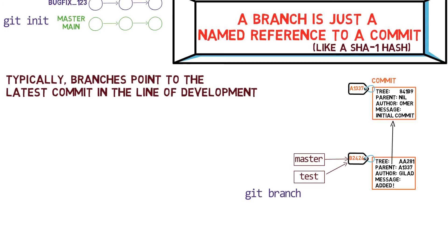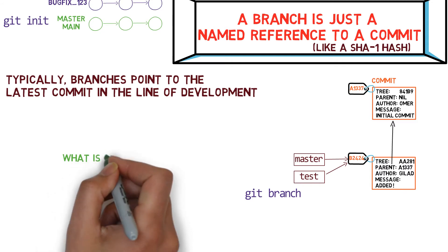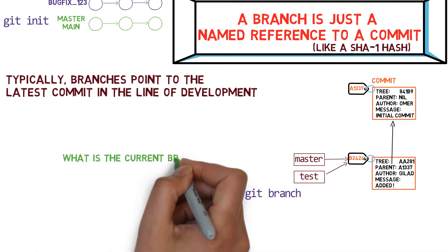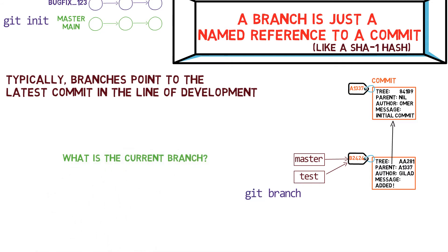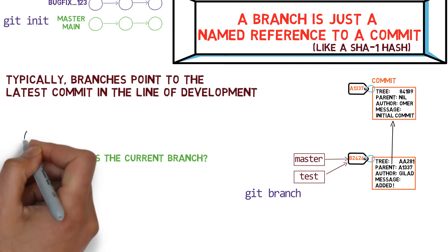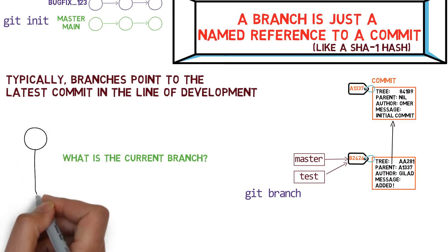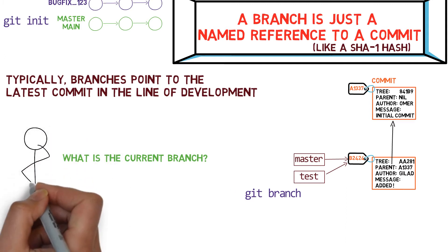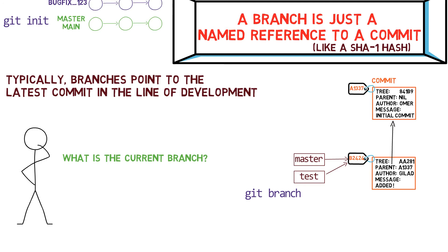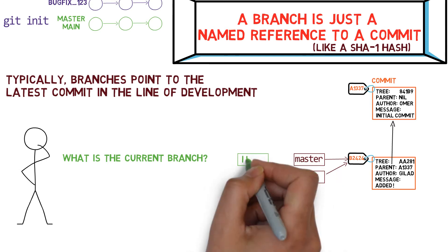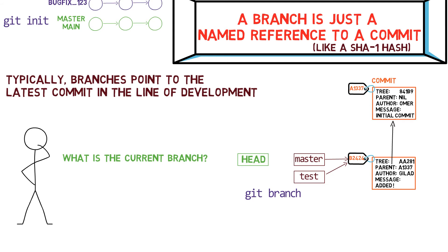But there is still an open question here. How does git know what branch we're currently on? After all, when we commit, we commit to the current branch, so git has to know what branch it is. Git knows what branch we're on by keeping a special pointer called HEAD. Usually, HEAD points to a branch, which in turn points to a commit. In some cases, HEAD can also point to a commit directly, but we won't focus on that in this video.